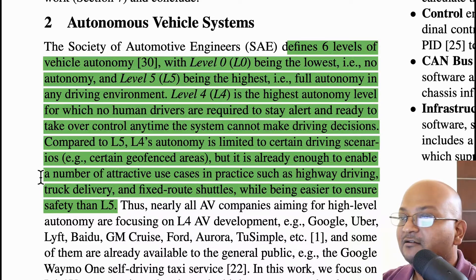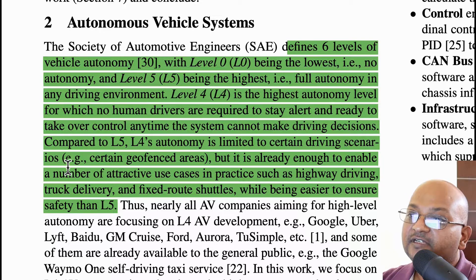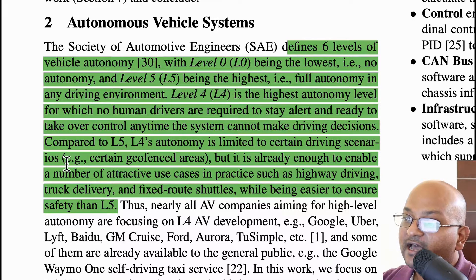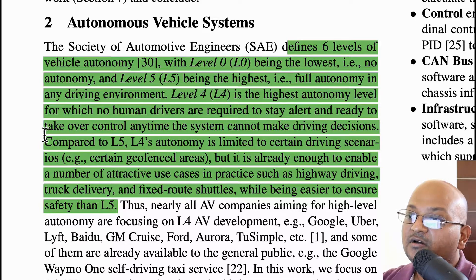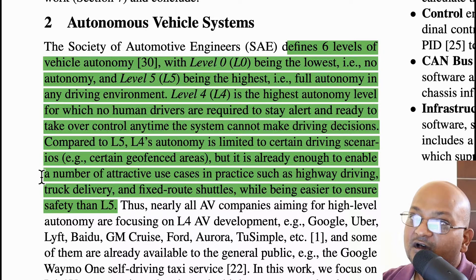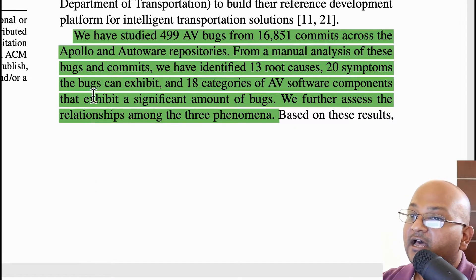When we talk about autonomous vehicles, we talk about six levels of autonomy, going from zero to five. Level zero is no autonomy at all — the human driver is in full control at all times. Level five is the highest level, where the car drives completely by itself in any driving environment. Level four, one below that, is full autonomy with no human driver required, but only under certain conditions — such as just highway driving or only fixed routes — which makes the autonomy problem slightly easier.